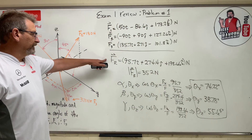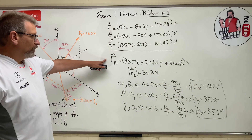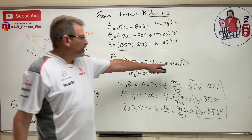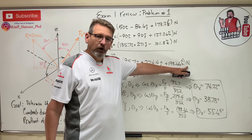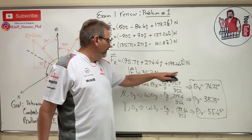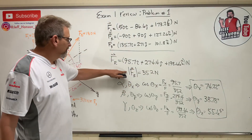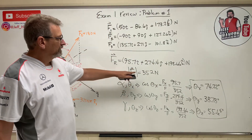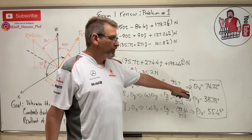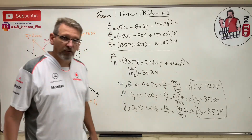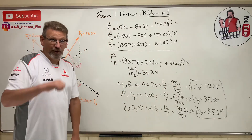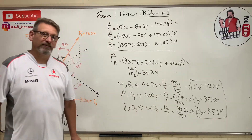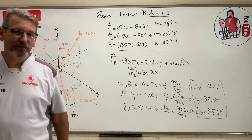There's your resultant vector — make sure to include units. The magnitude is 352N and the coordinate direction angles are 74.22°, 38.78°, and 55.64°. Good luck on the test — we're going to make 100!